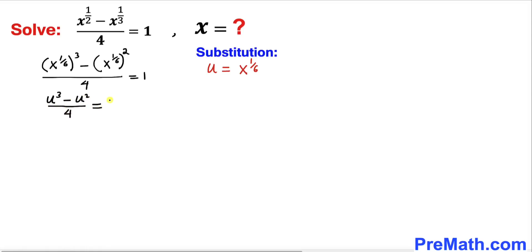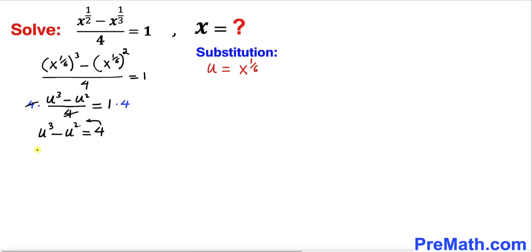Let's multiply both sides by 4 to remove the fraction. The 4s cancel on the left-hand side, and we are left with u^3 minus u^2 equals 4. Moving 4 to the left-hand side gives us the cubic equation u^3 minus u^2 minus 4 equals 0.